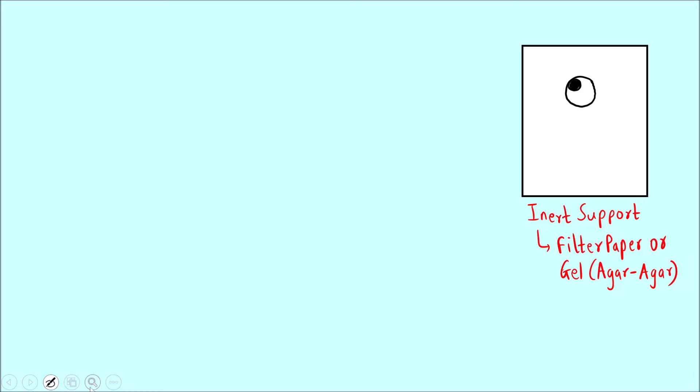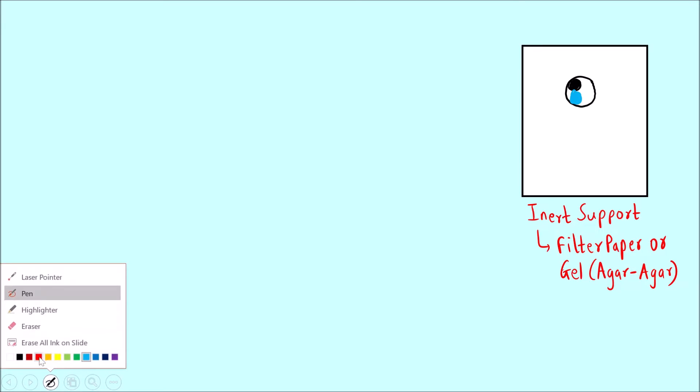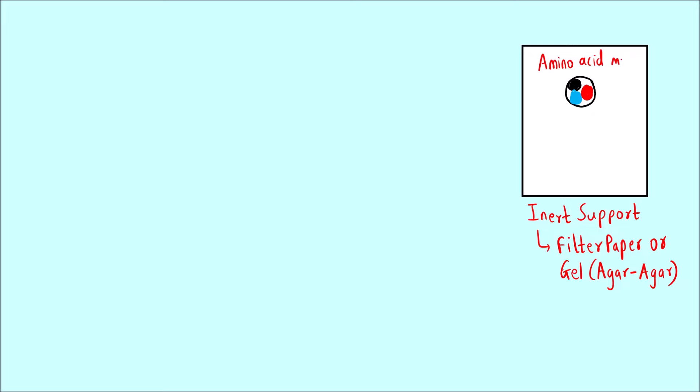Suppose I spot the amino acid solution here. There will be three different amino acids — it is a mixture of three amino acids that we have to separate. This is the amino acid mixture that we have spotted and that we have to separate.